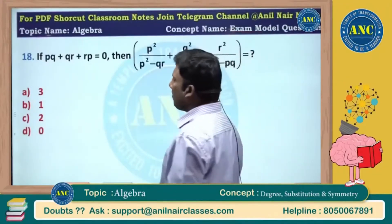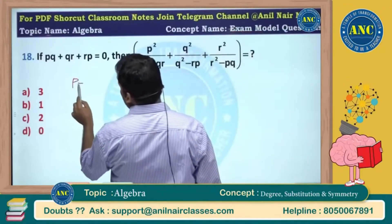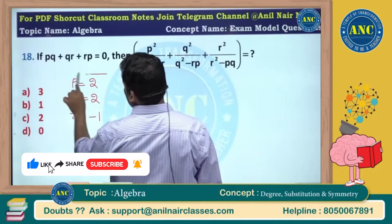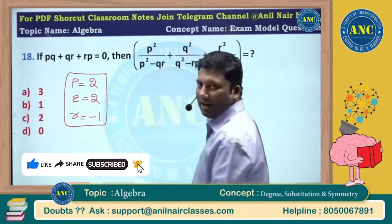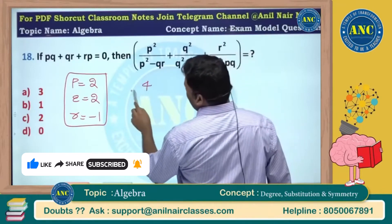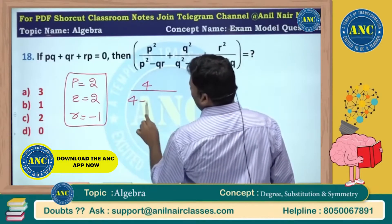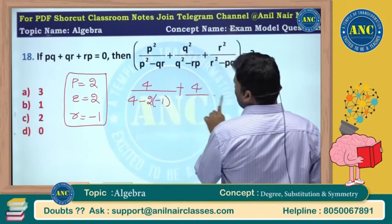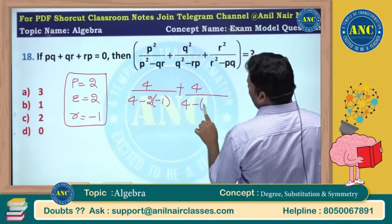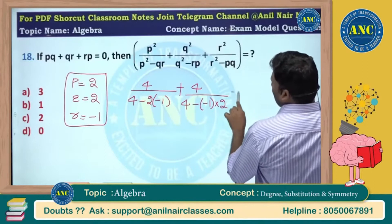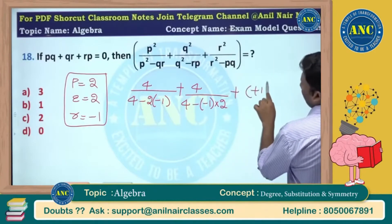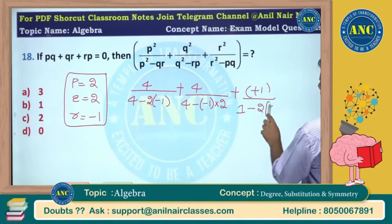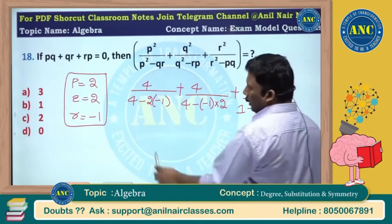Given that pq + qr + rp is equivalent to 0, with p = 2, q = 2, r = -1. Let us substitute: p² = 4, minus qr = 2 × (-1), plus q² = 4, minus rp where r = -1 and p = 2. Then r² = 1, divided by r minus pq, which is p × q = 1 minus 4.